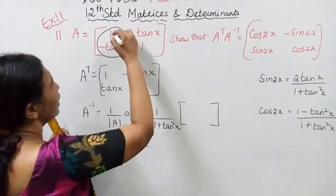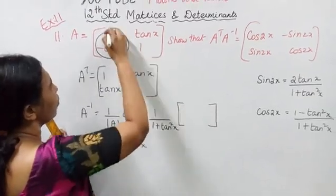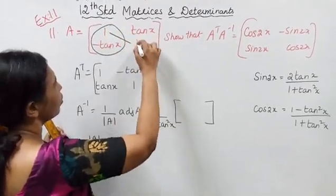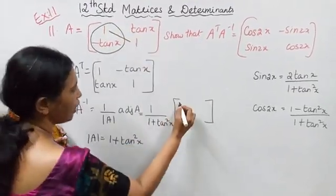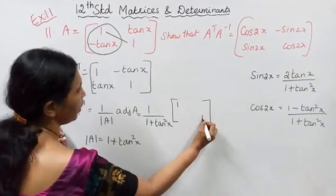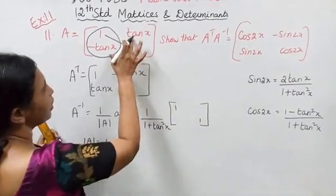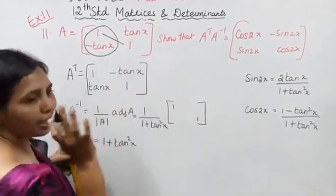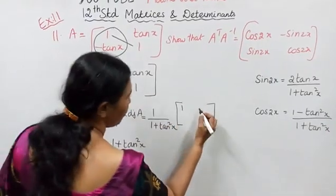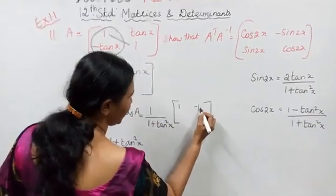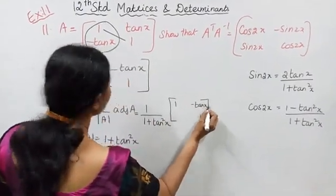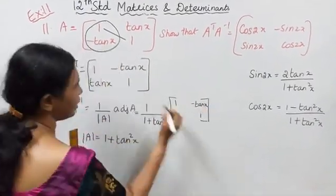For the adjoint of A, the diagonal elements 1 and 1 stay the same, and the off-diagonal elements tan x and minus tan x swap and change sign, giving: 1, tan x; minus tan x, 1. This completes A inverse.